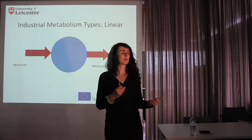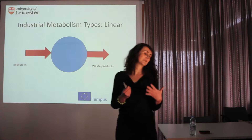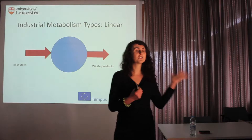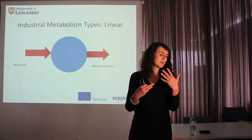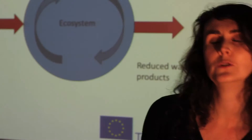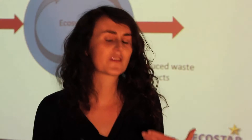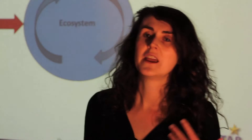In industrial metabolism, we think of three different types. First, a linear metabolism — what most of our industrial systems look like today. We have a large input of resources and energy, they go into the system, and waste products come out that generally have to be dealt with in some way. There's pollution, or there's work and cost involved in getting rid of those waste products. In terms of the structure of that system, it's effectively linear.